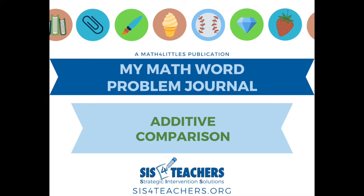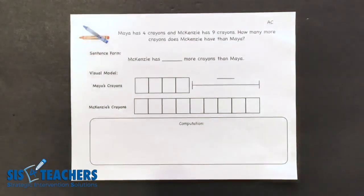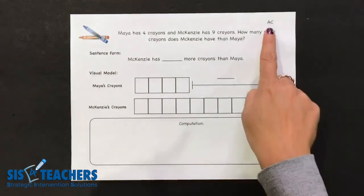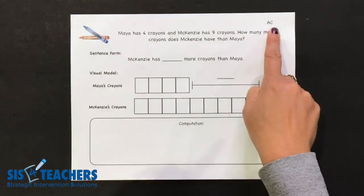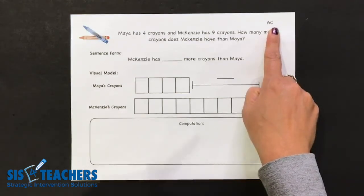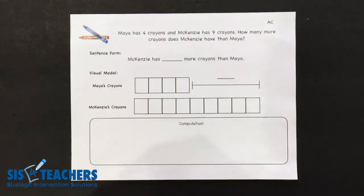Thanks so much for joining us today to look at a tutorial video on how to use a step-by-step visual model checklist to help students with word problems. My name is Shannon from SIS4Teachers.org and we're going to be showing you how to do an additive comparison bar with first grade students. It's really important that students have gone through this in a developmentally appropriate way and are feeling comfortable with part-whole addition, part-whole subtraction, as well as part-whole missing add-in before we bring in the complexity to additive comparisons.